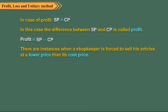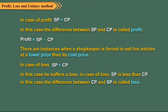There are instances when a shopkeeper is supposed to sell his articles at a lower price than its cost price. In this case, the difference between CP and SP is called loss. So, loss is equal to CP minus SP.